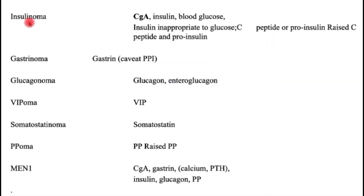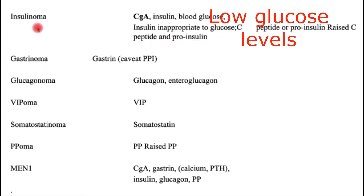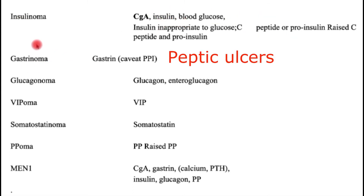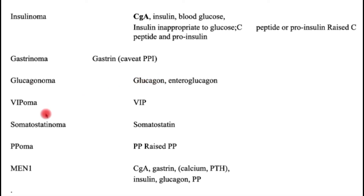For functional pancreatic tumors, the types that produce hormones are outlined here along with the tests required for each. There is insulinoma causing excess insulin release, gastrinoma causing excess gastrin, glucagonoma which increases glucose levels, VIPoma causing significant diarrhea and abdominal crampy pain, and somatostatinoma, among others.